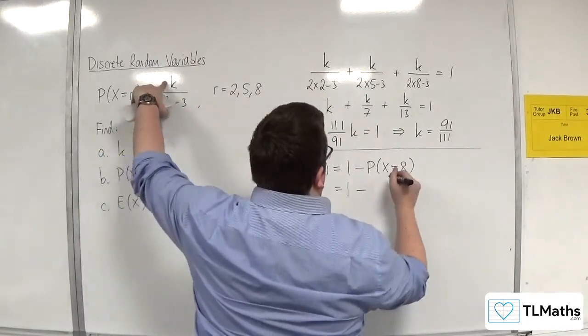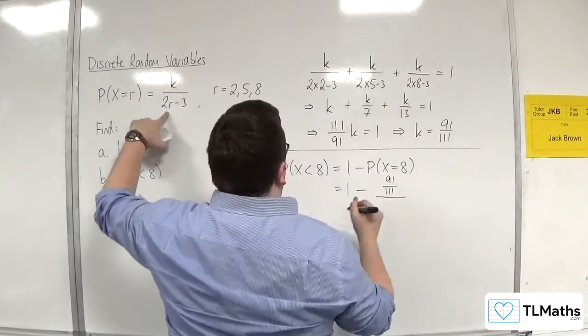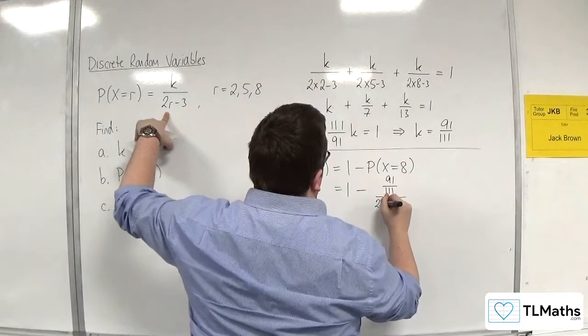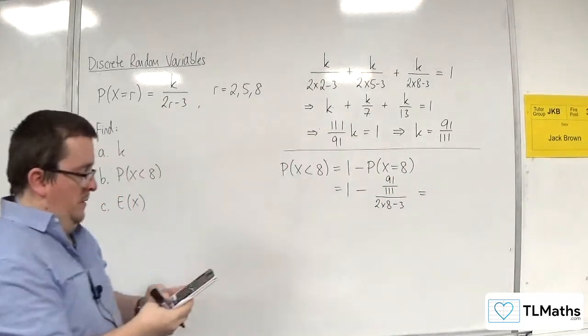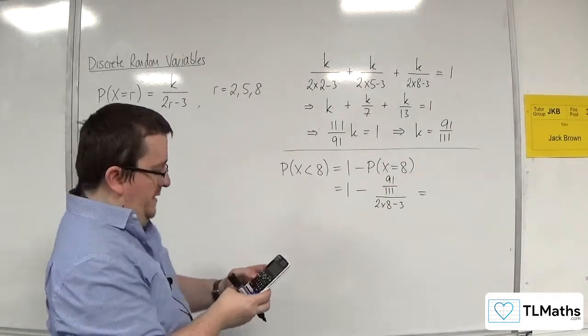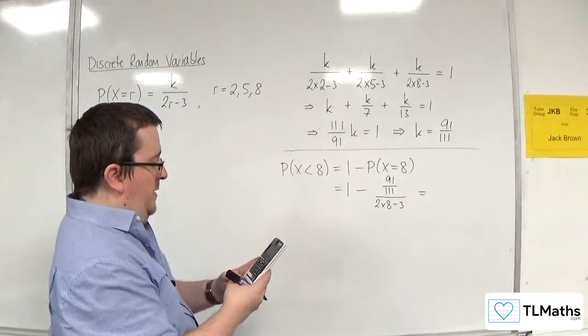So 1 take away the probability of x being equal to 8. Well, we know the k value is 91 over 111. And here we've got 2 times 8 take away 3. So 1 take away, 91 over 111, over 2 times 8 take away 3.